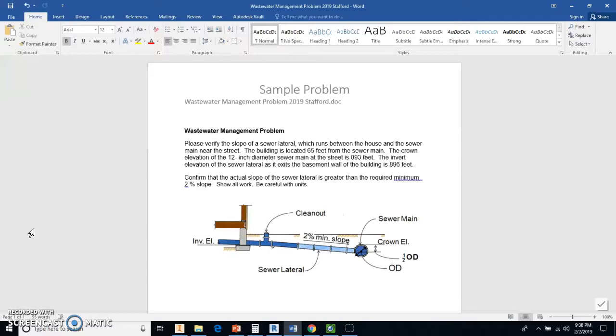The crown elevation of the 12 inch diameter sewer main at the street is 893 feet. The invert elevation of the sewer lateral as it exits the basement wall of the building is 896 feet. Confirm that the actual slope of the sewer lateral is greater than the required minimum 2% slope. Show your work and be careful with units.